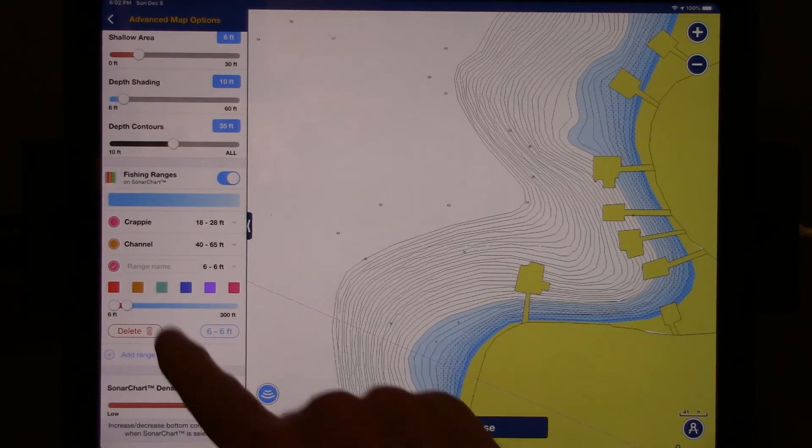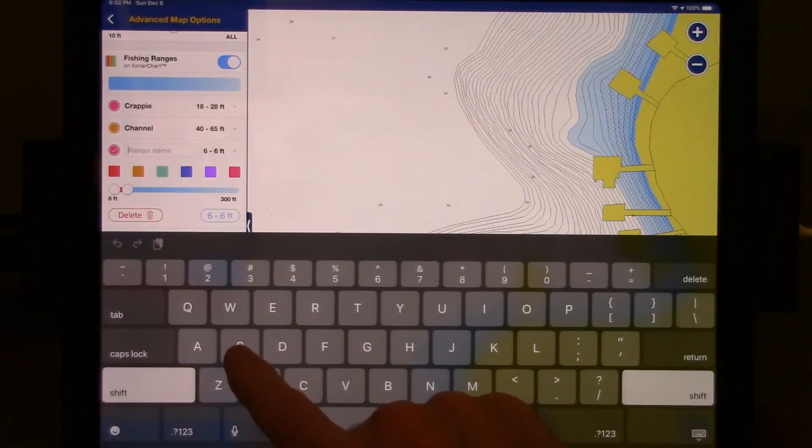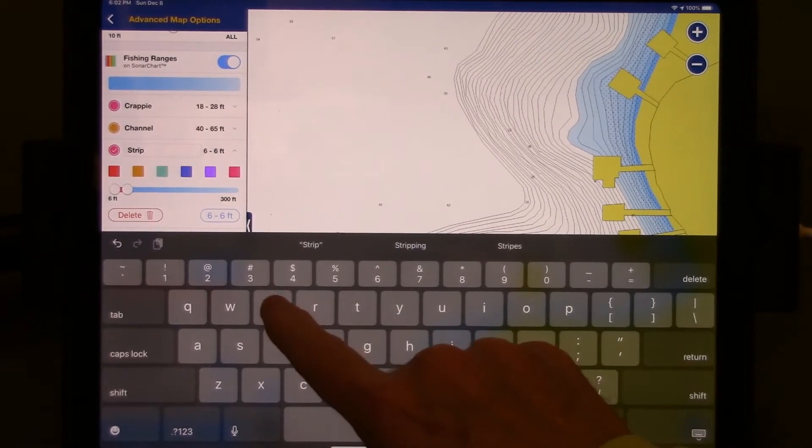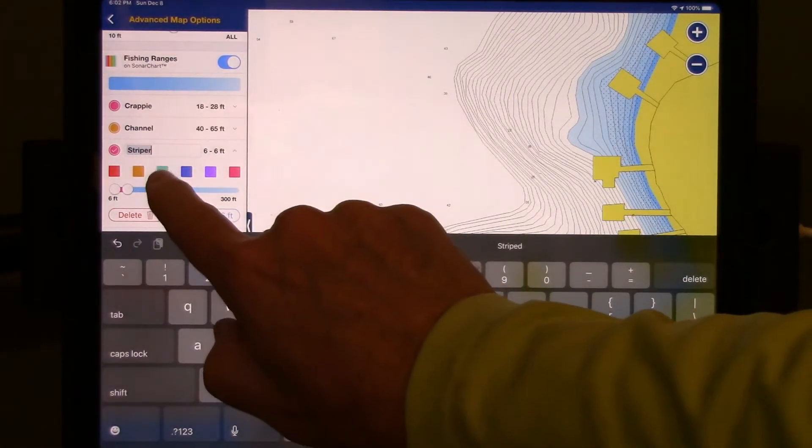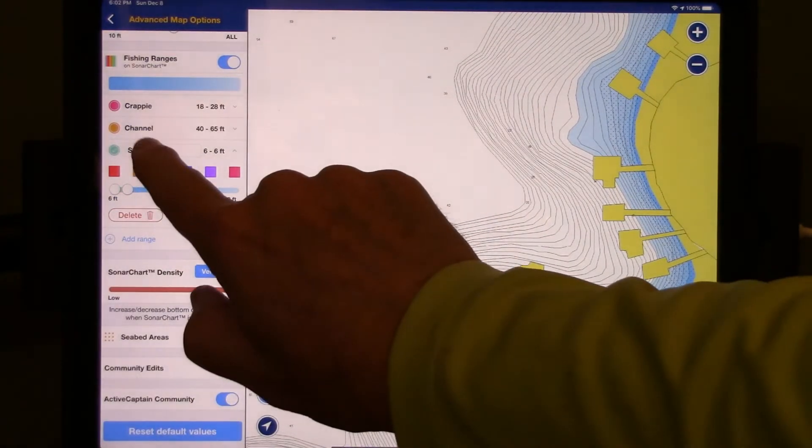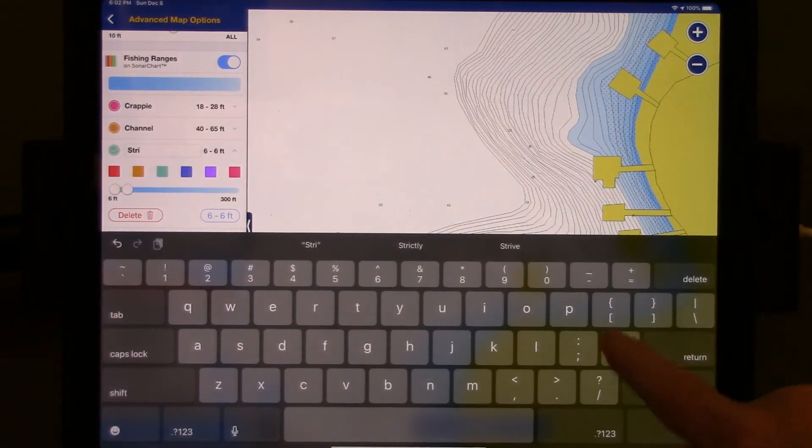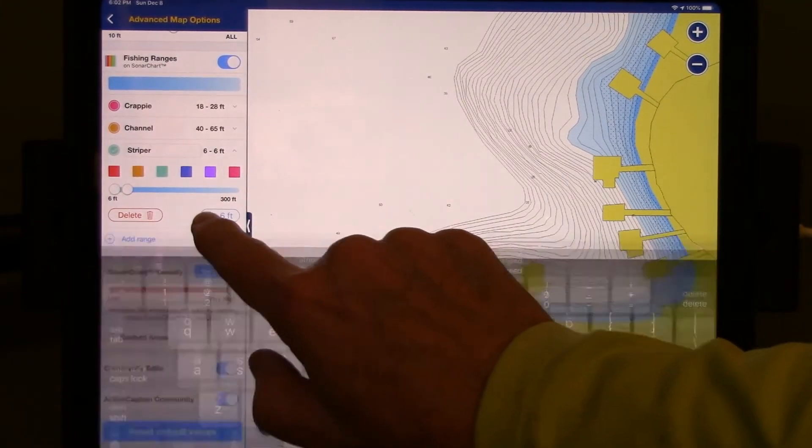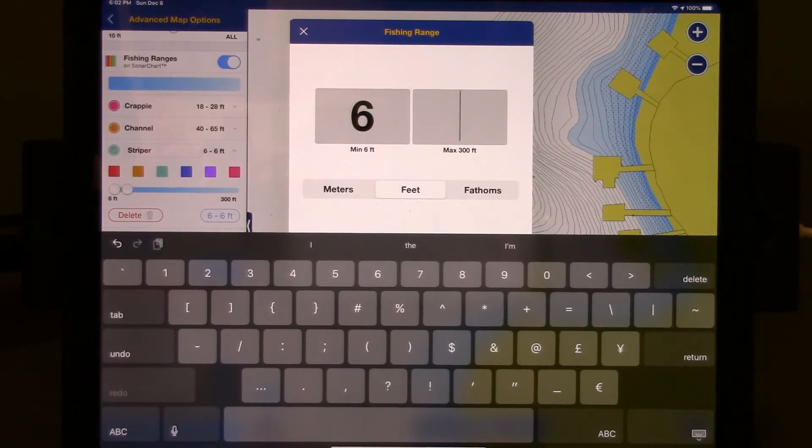So what I'm going to do is I'm going to create another range name and I'm going to call it striper. And I'm going to color that in green. No, not stripper. Striper. We're going to set our target depths. Now we mentioned that the fish are holding over a 60-foot bottom.